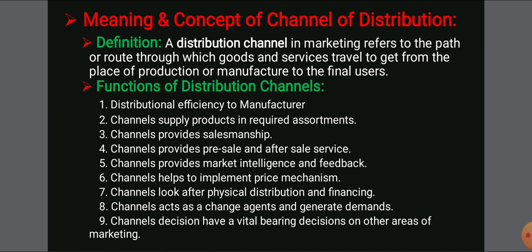The distribution channels help to improve the distributional efficiency of the manufacturer. It is not possible for a manufacturer to supply the product to each and every consumer directly. That's why the manufacturer uses different distribution channels or intermediaries — like wholesalers, distributors, and retailers — who then give that product to the end user or consumer.